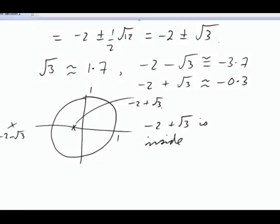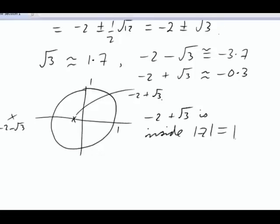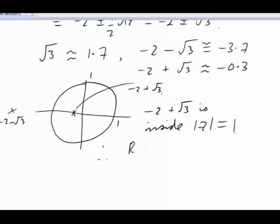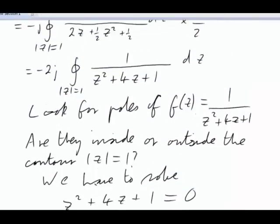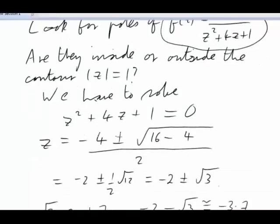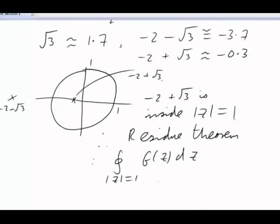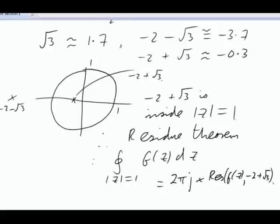That's inside mod z equals 1. So our Cauchy Residue Theorem says that the integral around the contour of f of z dz, f of z remember was our quadratic underneath, 1 over z squared plus 4z plus 1, it's that function there. So the integral around the contour is equal to 2πj times the residue of f of z at the pole which is inside. That's negative 2 plus root 3. I'm going to stop there and evaluate that residue and finalize the integral in part 2.